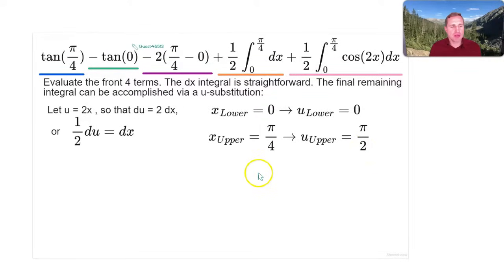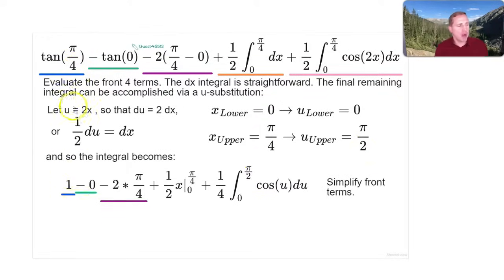So let's go ahead and start simplifying these terms. Tan(π/4) is exactly 1. π/4 is in radians. The tan(0) radians is 0. Whenever you subtract 0 inside of parentheses, it makes no difference, because it's nothing. So we end up with -2 times π/4. This integrates to x, 0 to π/4. And because we had to replace this dx with 1/2 du, 1/2 times this 1/2 ends up being 1/4.